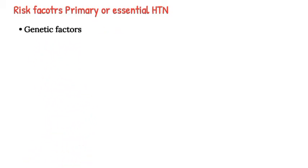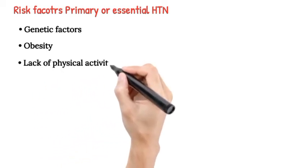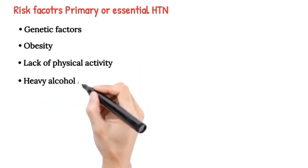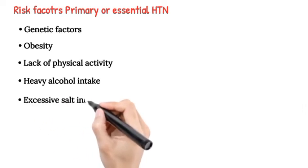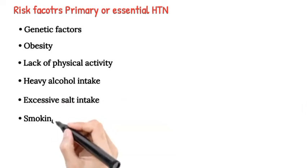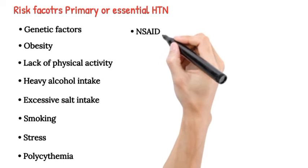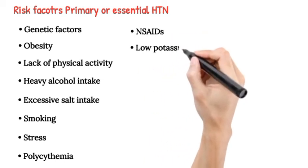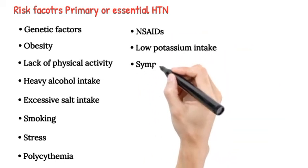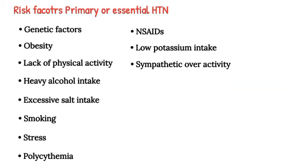Risk factors for primary or essential HTN include: genetic factors, obesity, lack of physical activity, heavy alcohol intake, excessive salt intake, smoking, stress, polycythemia, NSAIDs, low potassium intake, sympathetic overactivity, and insulin resistance.